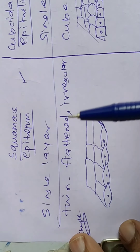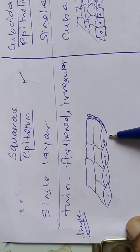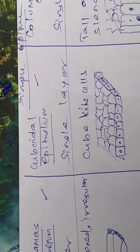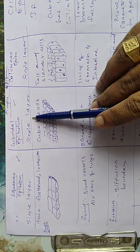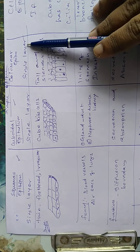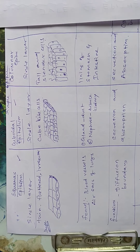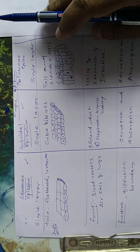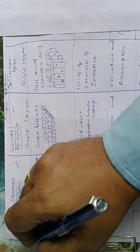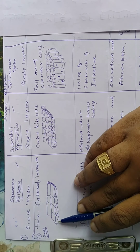It comes under simple epithelial tissue, so all three types have single-layer cells. The shape of squamous cells is thin, flattened, and irregular. In the case of cuboidal — also single layer. In the case of columnar — also single layer. Everything is single layer, arranged laterally, not one above another. That is called simple epithelium, with little intercellular spaces. Now the second point: shape. Squamous — thin, flat, and irregular.